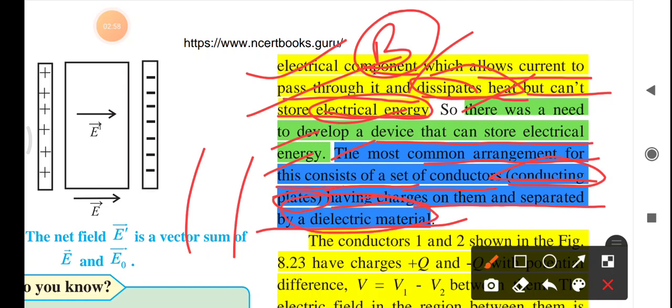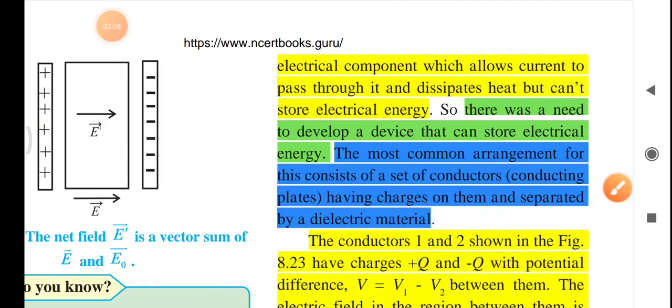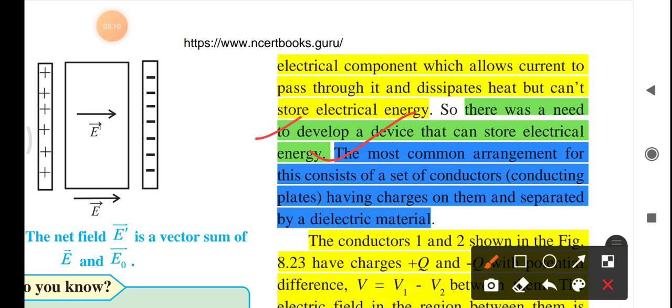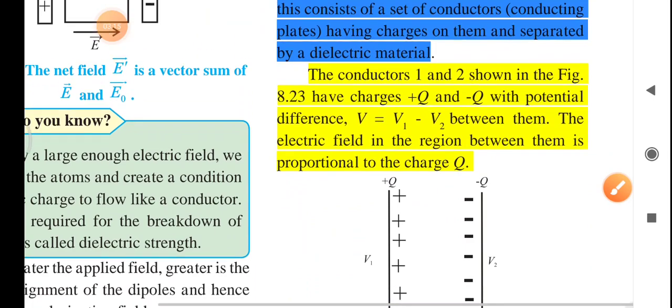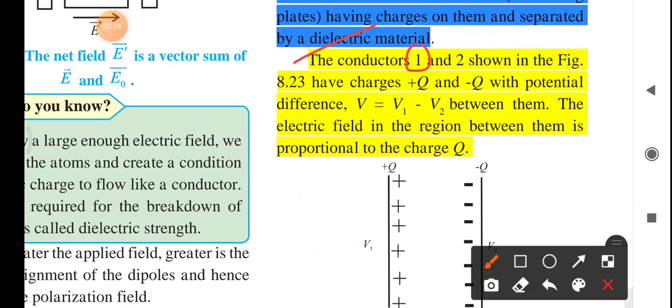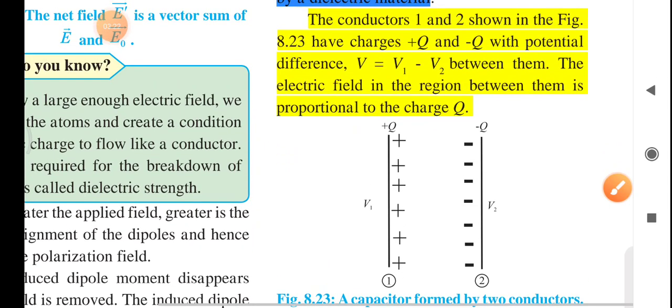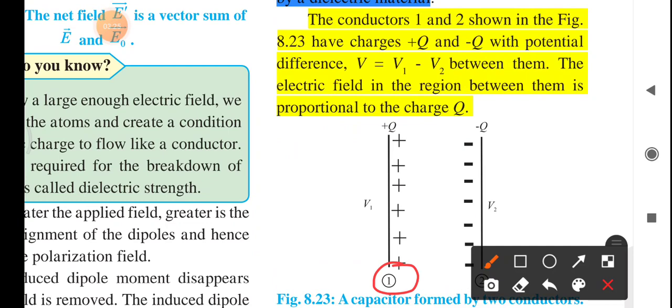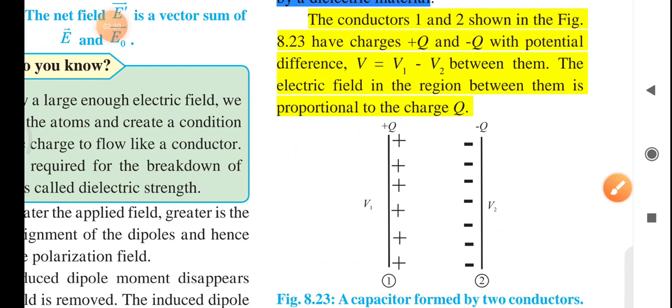Dielectric materials are there in between two plates. This is one of the plate, this is another plate. Here we have dielectric material. So these two plates are separated by the dielectric materials. This arrangement, this spatial arrangement, is known as the capacitors.